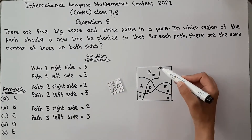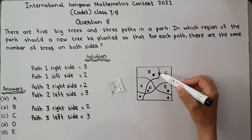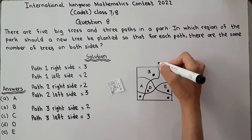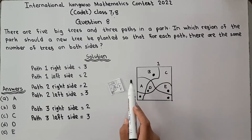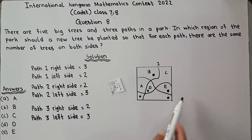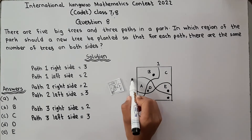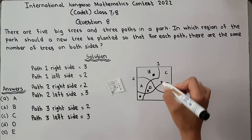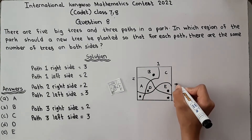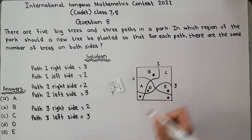Look, there are 3 paths. Path number 1 goes here and from here. This is path number 1. Path number 2 is this, and path number 3 is this. So there are 5 big trees and 3 paths.